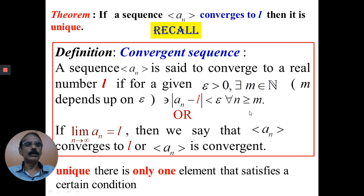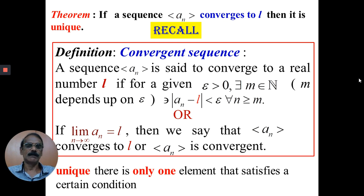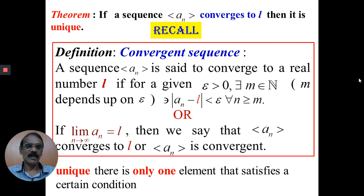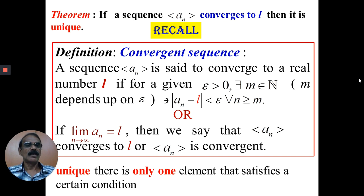How do you prove that l is unique? In general, in mathematics, whenever you want to prove uniqueness, we always consider two such elements. Here, we are given that the sequence converges to l, so we consider l1 and l2 to be two such elements. To show it is unique, we have to show that l1 is equal to l2.